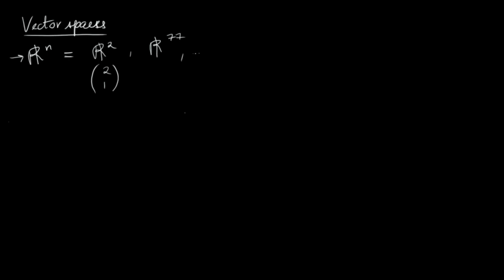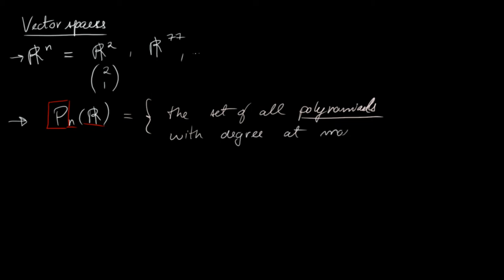The next vector space I want to talk about is what we call P_n(R). So each of these letters has a reason for being there. The P just stands for polynomials. So I'll talk about that in a second. And the n and the R, let me just give you the definition. So vaguely speaking, P_n(R) is the set of all polynomials with degree at most n. So that's where the n comes from. And with real coefficients. So that's where the R comes from.